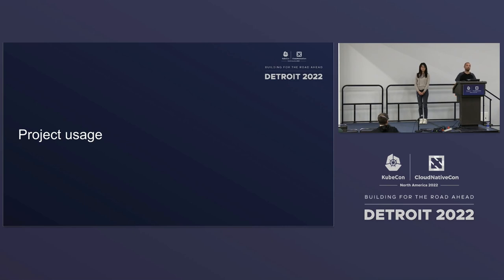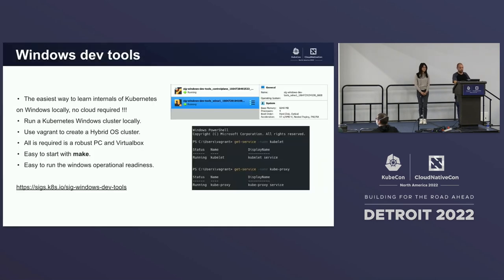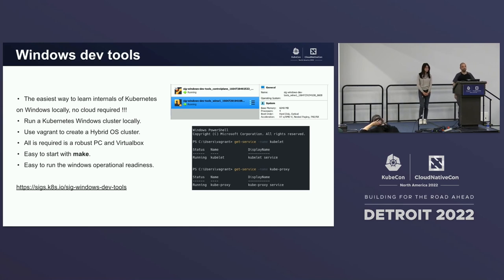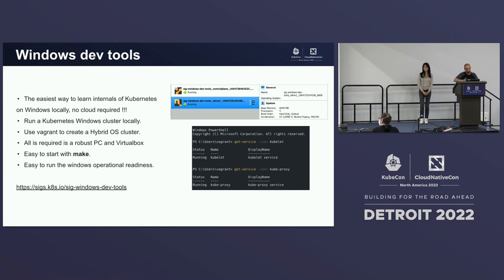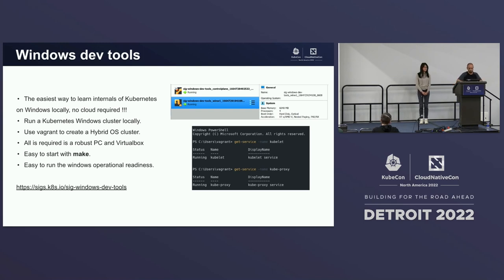We've started to explore a few usages of this project. First, on the developer side, you can use the Windows Dev Tools to bootstrap your own cluster. It's super easy — you don't need a cloud. You just run it locally. You need a good machine, VirtualBox, and Vagrant. Everything is open source and free for personal use. In the project, you just run make, and you can run the Windows operational readiness tool inside your own local virtual Windows cluster.